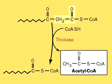Thiolase, with CoA-SH, cleaves a two-carbon unit from the molecule, which leaves the reaction as acetyl-CoA, producing an acyl-CoA two carbons shorter.